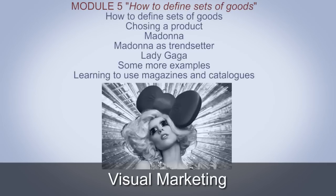In the module how to define the set of products, we analyse how to showcase an object, how to evaluate the stylistic context in which it can be placed, the evolution and interpretation of taste, the way that magazines and catalogues can be used to gain an insight into reality, and the semantic and emotional value of images that result in an emotional sale.